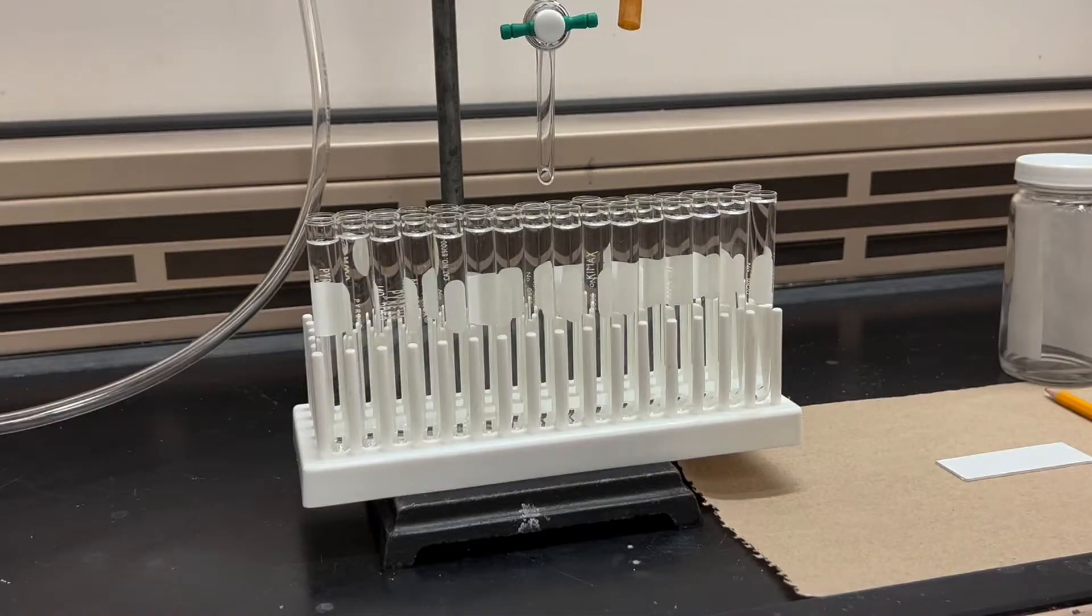So here's the new part. Let's say that I've collected two rows of fractions from my column, but it's colorless. So I'm now wondering, is the compound that I'm interested in, is it already off the column or is it not? And if it is off, where is it?